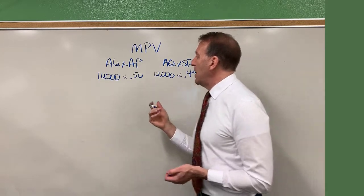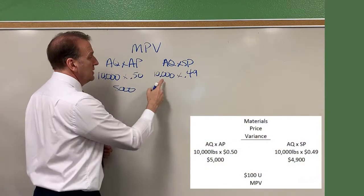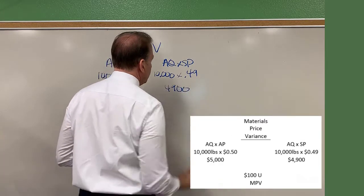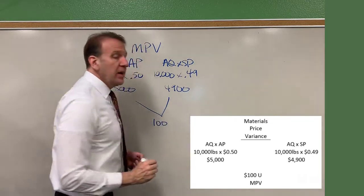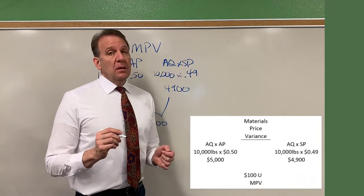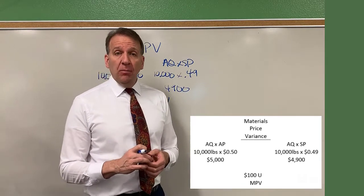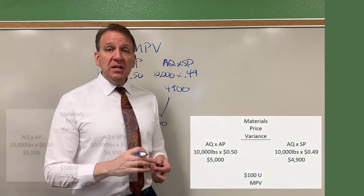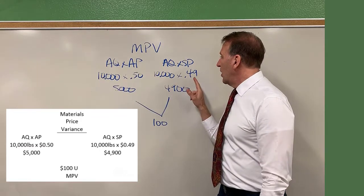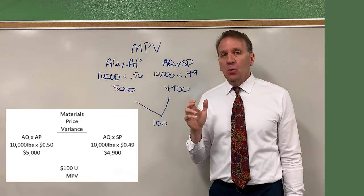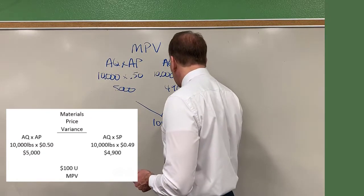So now we can multiply these out and compare them. 10,000 times 50 cents is $5,000. 10,000 times 49 cents is $4,900. You take the difference between these two and you get a variance of $100. But we need to say — in accounting we use the terms — is it favorable or unfavorable? The actual price was 50 cents and our standard was 49 cents, so the price was actually more. That's not good, so this would be an unfavorable variance.